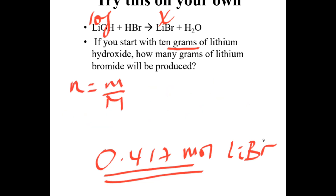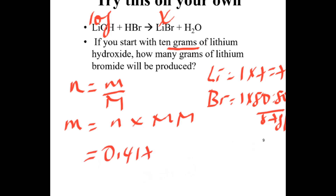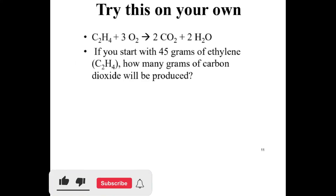Mass equals moles times molar mass. The molar mass of lithium bromide: lithium plus bromine equals 87 grams per mole. So 0.417 moles times 87 grams per mole equals 36.25 grams of lithium bromide are produced.